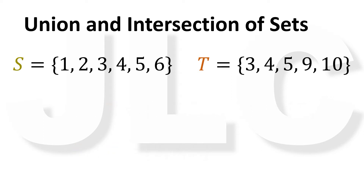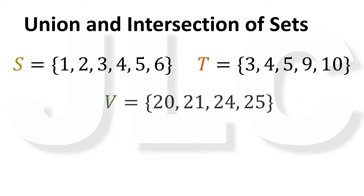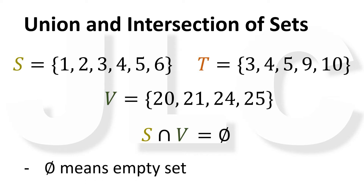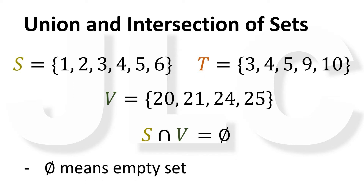Now what if there is another set V with elements 20, 21, 24, 25, and we want to find the intersection of S and V? As we can see, they have no common elements. Therefore, the intersection is an empty set. The empty set is a set with no elements.